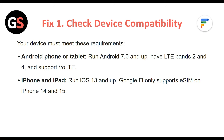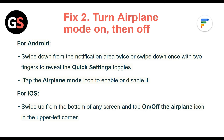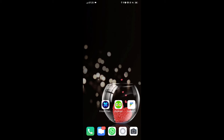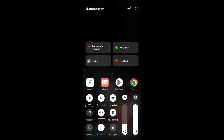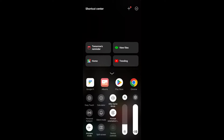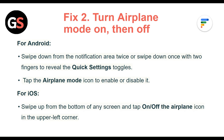Google Fi only supports eSIM on iPhone 14 and 15. Fix 2: Turn Airplane Mode on then off. For Android, swipe down from the notification area twice or swipe down once with two fingers to reveal the quick settings toggles, then tap the Airplane Mode icon to enable or disable it. For iOS, swipe up from the bottom of any screen and tap on and off the Airplane icon in the upper left corner.